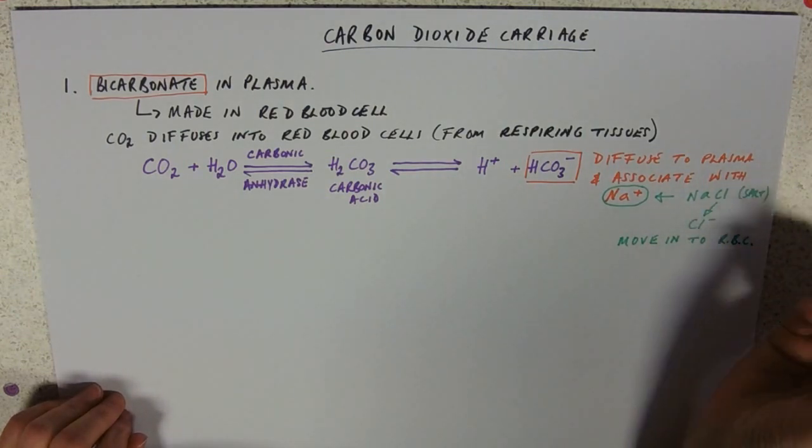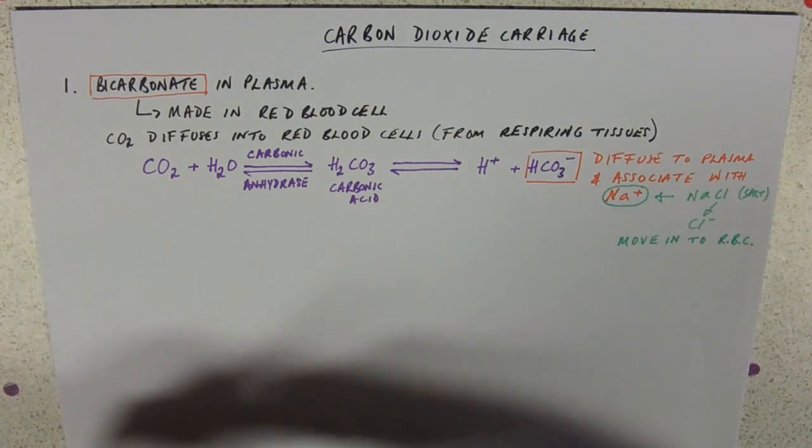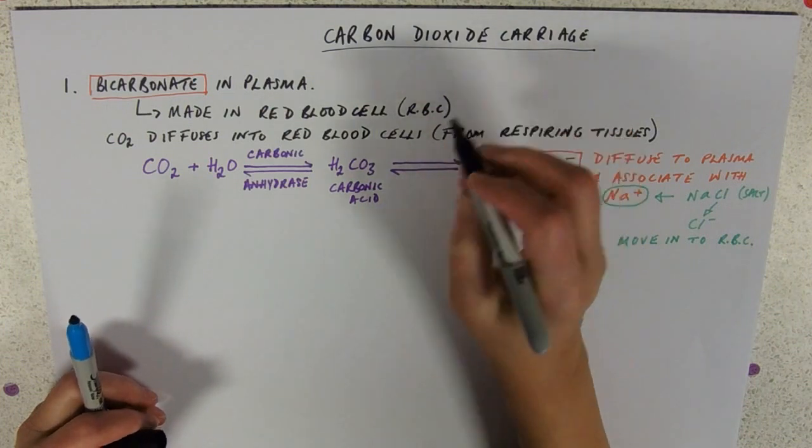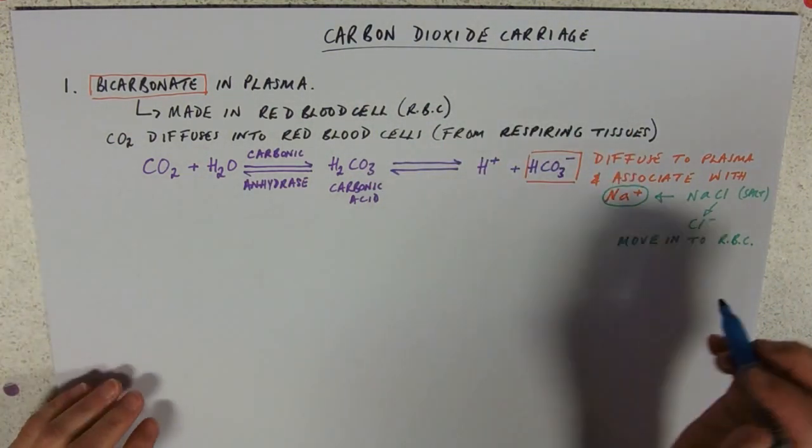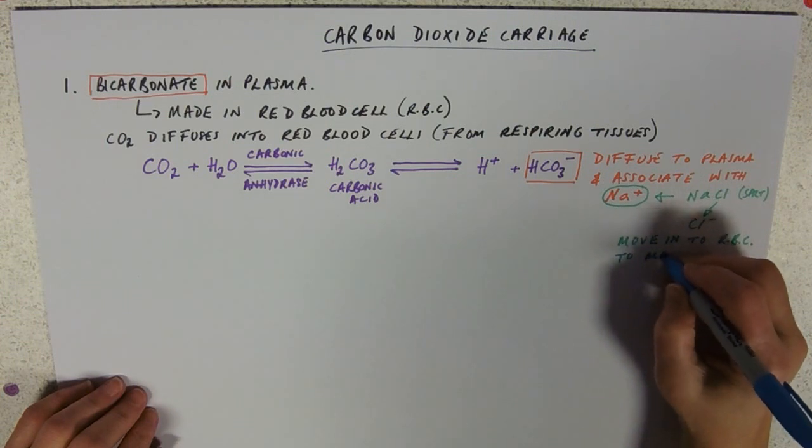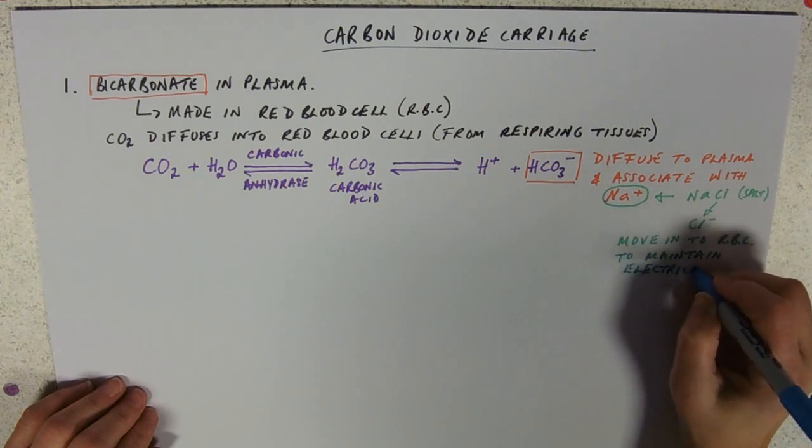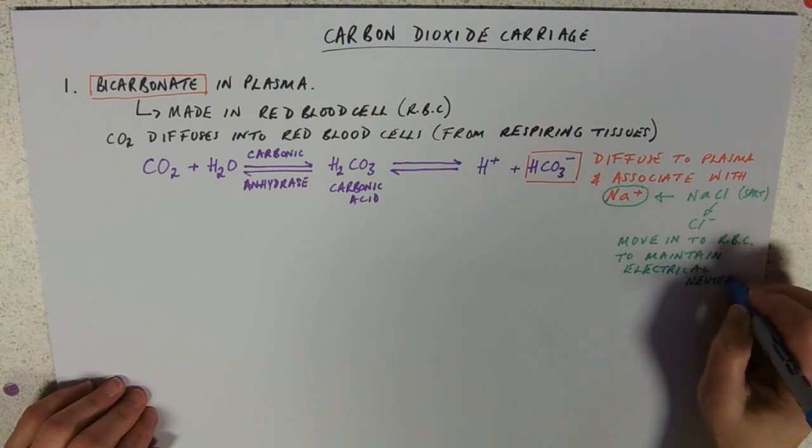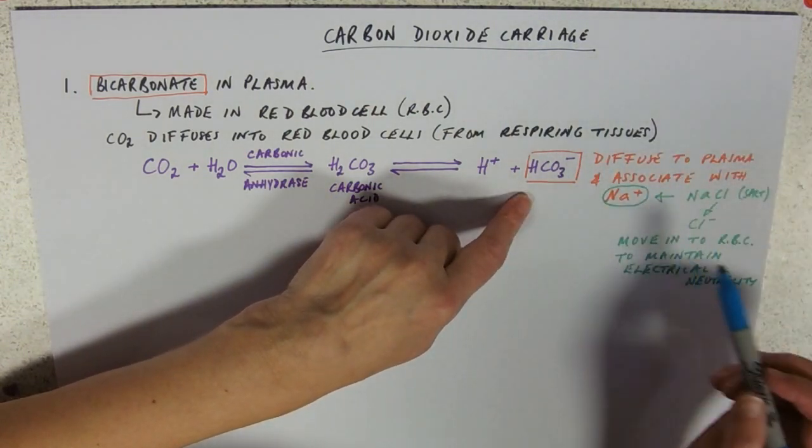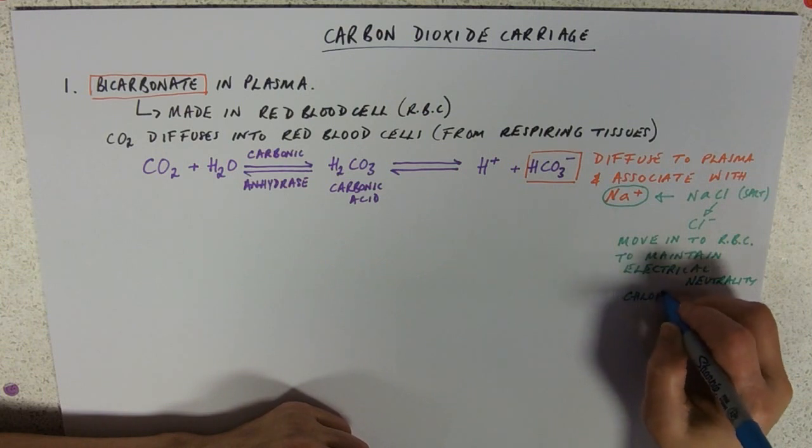Don't do that in an exam though whatever you do unless you tell the examiner. So remember the rule if you're going to abbreviate red blood cell to RBC. Red blood cell first time you write it RBC. Knock yourself out. You can then use RBC. So move into RBC to maintain electrical neutrality. So because we've lost a negative ion from the cell into the plasma we then need to return a negative ion in just to keep the charges balanced. And that phenomenon is called the chloride shift.